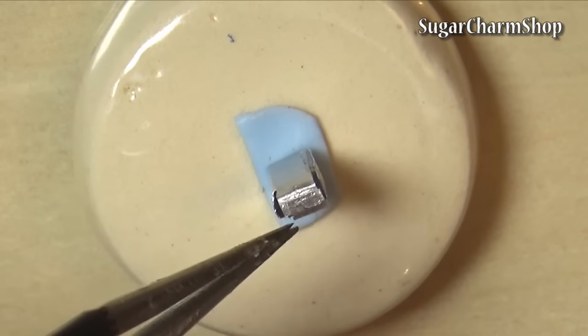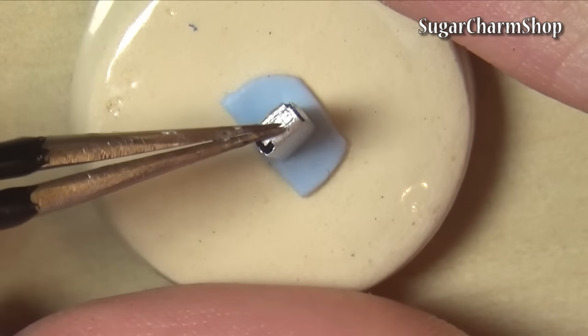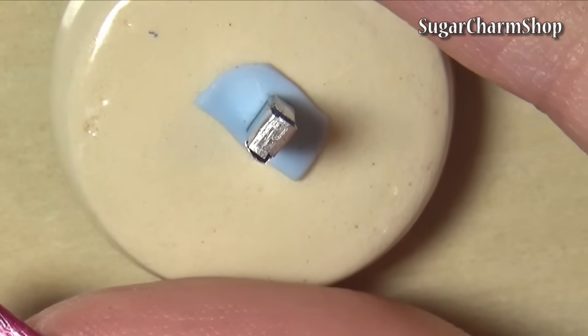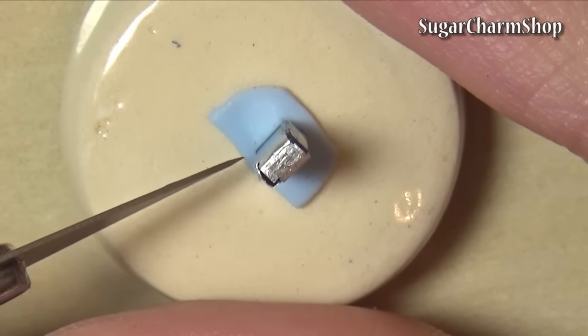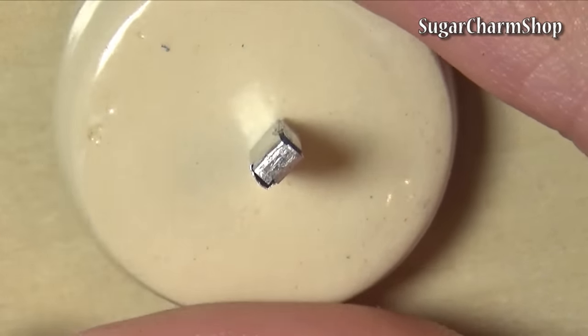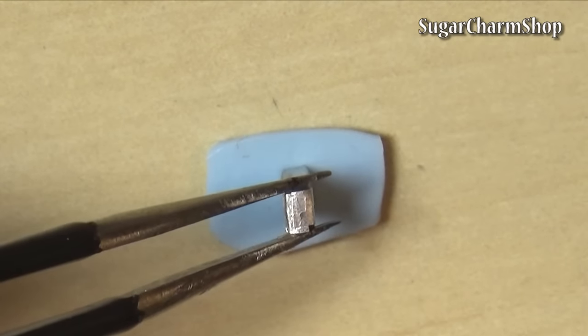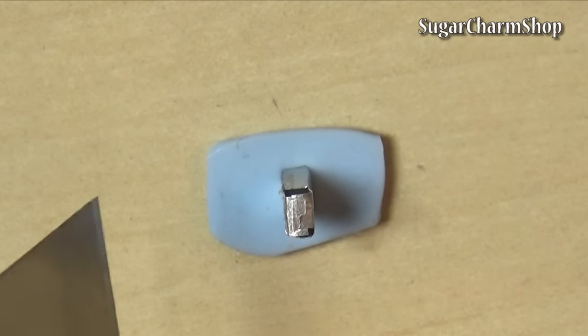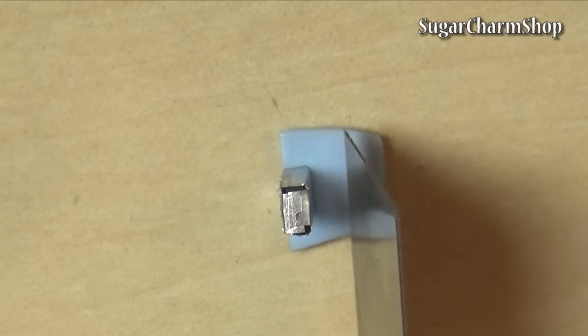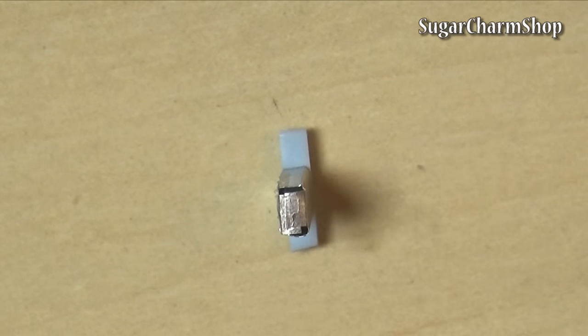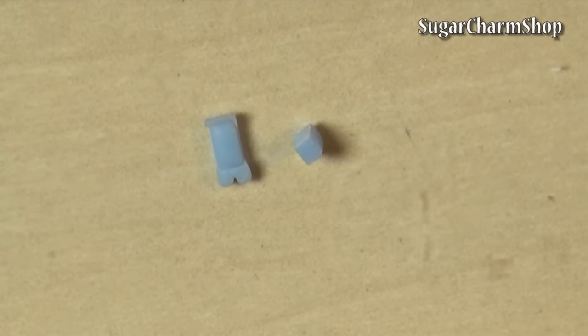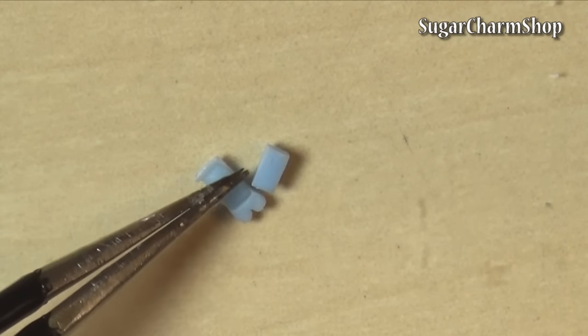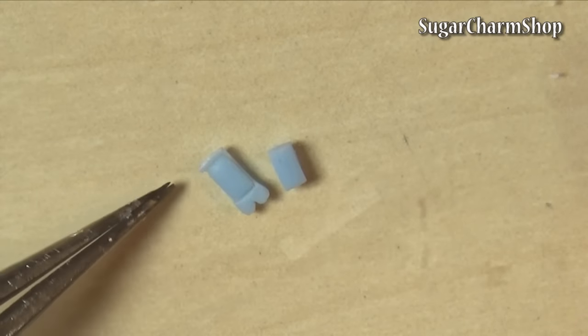You then want to roll out a thin sheet of clay and measure the feet as well as a small piece that's going to go on the inside. And after baking you can take this small piece for the inside and just put it into the tube.